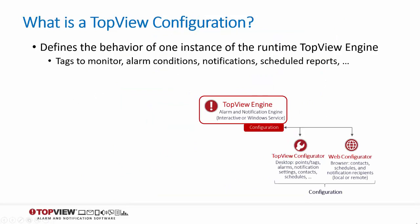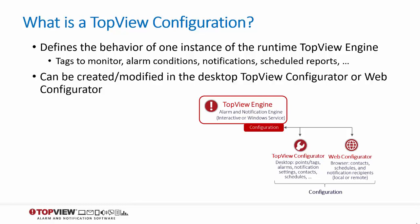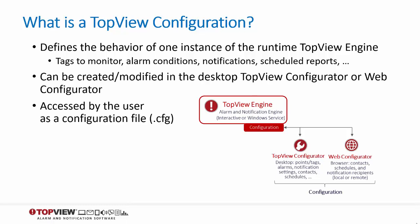Although many SCADA users will only run one instance of the Top View engine, we allow users to run multiple runtime engines. Each engine is a separate process. Larger installations may want to group their alarms into smaller sets, and therefore separate engine processes that run independently of one another. Each engine is controlled by a configuration that defines the alarms and notifications that the engine is responsible for. This configuration can be viewed and edited in both the desktop configurator and the web configurator. The user sees this configuration as a single file with a .cfg extension, although under the hood there are multiple files involved in the storage of the configuration settings.